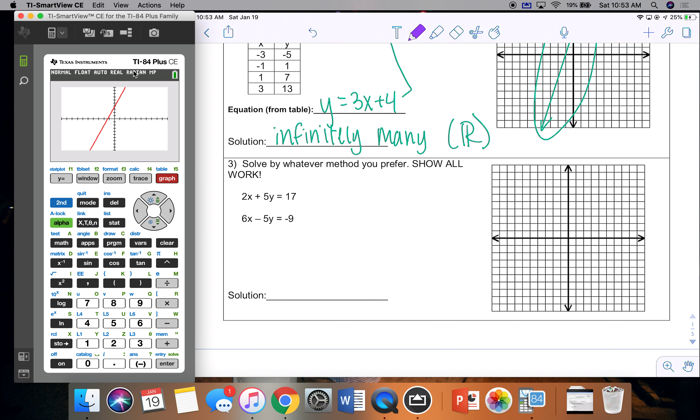Problem 3, I noticed that these are x's, y's, and equal answer. And so I can go ahead and use matrices. This one's set up for it. All I have to do is write it down and plug it in. So I have 2, 5, 17, 6, negative 5, and negative 9.